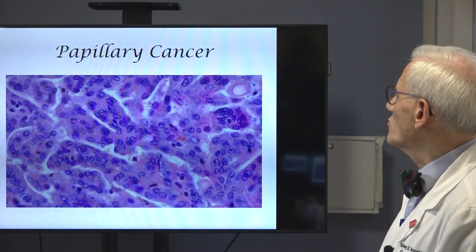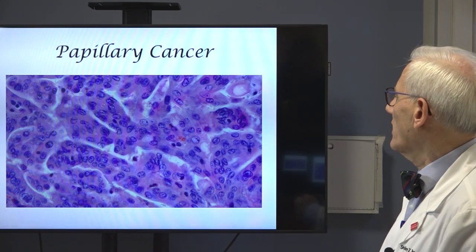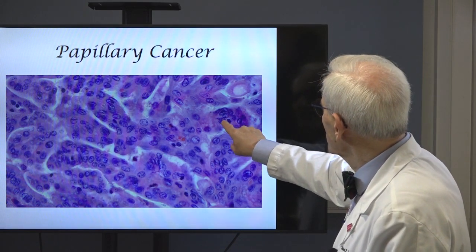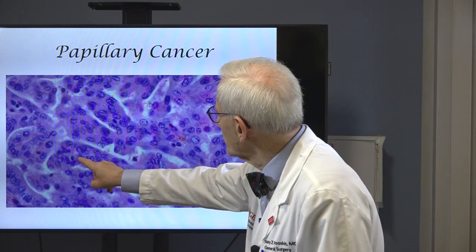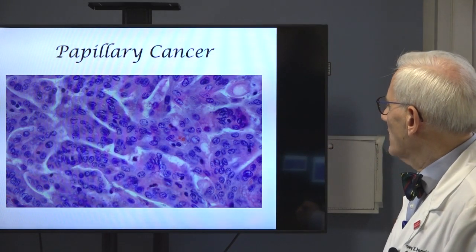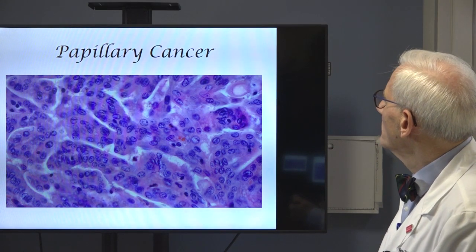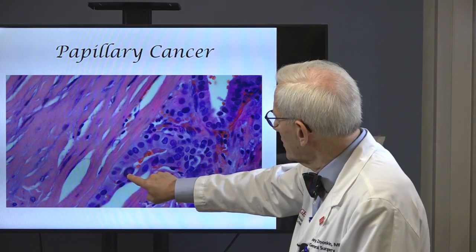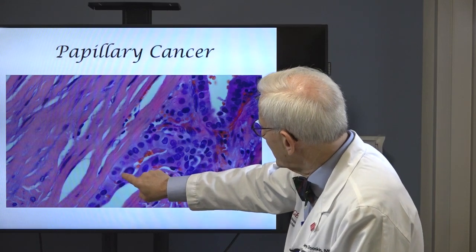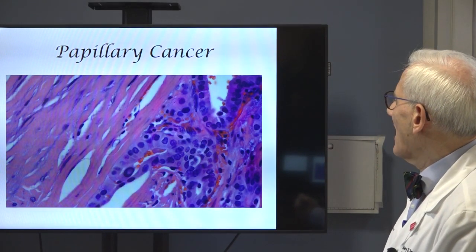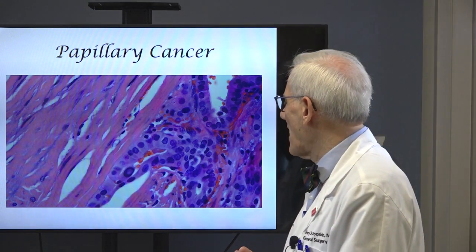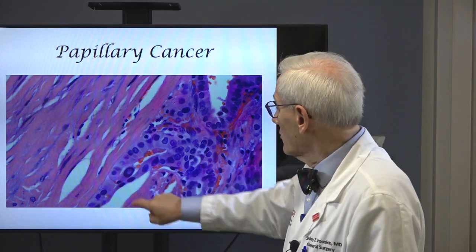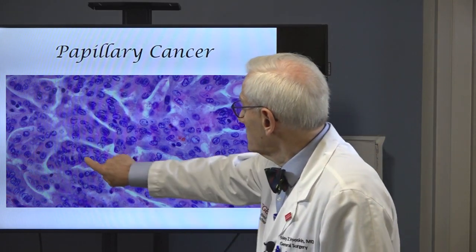Under the microscope, this is what papillary thyroid cancer looks like. You can see these projections — they're not circles. And you can see in the nucleus there's a line called nuclear grooves. There are also nuclear inclusions. So we can make the diagnosis of papillary thyroid cancer based on three things: the branching, the inclusions, and the grooves.